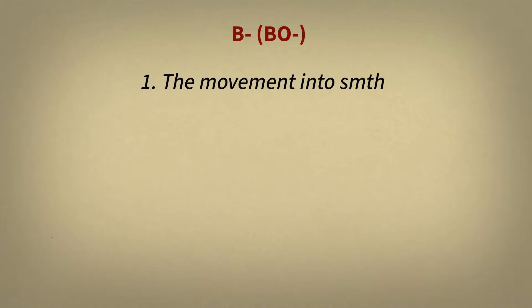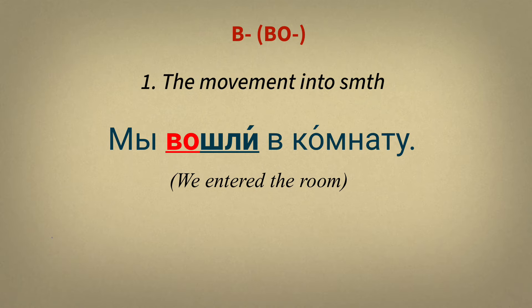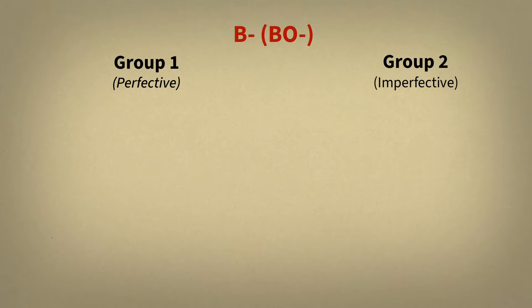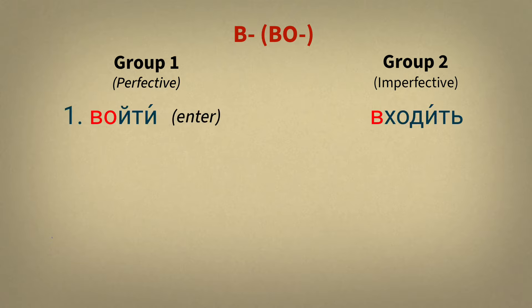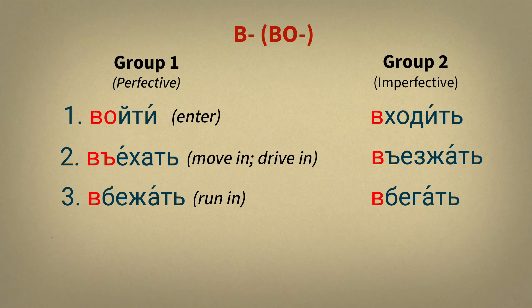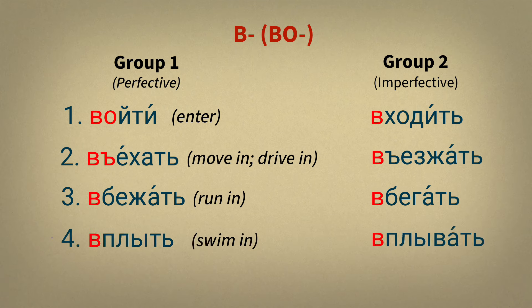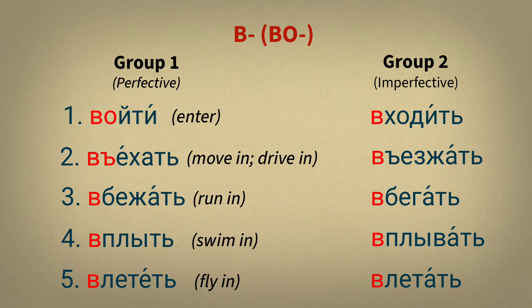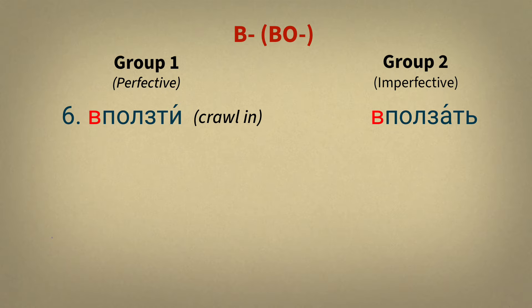The prefix В/ВО has two meanings. The first meaning is movement into something. For example, Мы вошли в комнату — We entered the room. The prefix here is ВО. The verb pairs with this prefix are: Войти – Входить (Войти is perfective, Входить is imperfective). Въехать – Въезжать. Вбежать – Вбегать. Вплыть – Вплывать. Влететь – Влетать. Вползти – Вползать. Note: Врести is not used with this prefix.